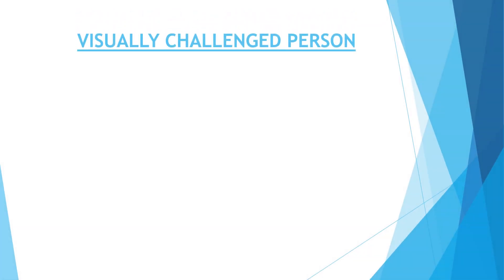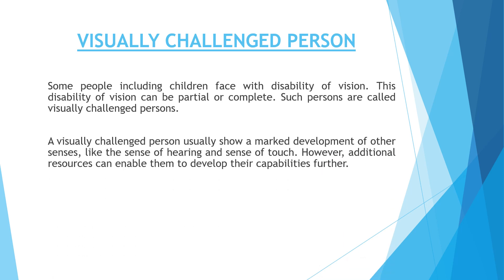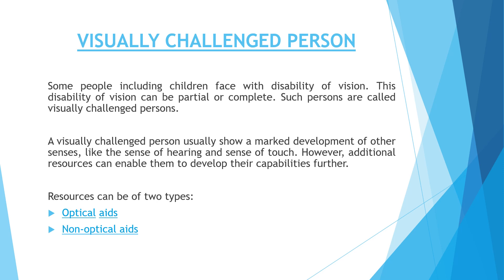Our next topic is visually challenged persons. Some people, including children, face a disability of vision. This disability can be partial or complete. Such persons are called visually challenged persons — it means their ability to see has decreased. A visually challenged person usually shows marked development of other senses like hearing or touch. However, additional resources can enable them to develop their capabilities further. These resources are optical aids and non-optical aids.